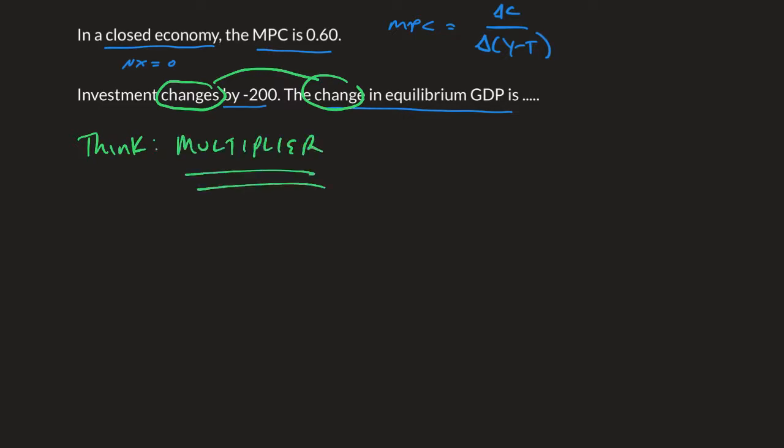In this case, we have the autonomous spending multiplier. That multiplier equals 1 over 1 minus MPC. So our spending multiplier is 1 over 1 minus 0.60, which is 1 over 0.4, which equals 2.5.